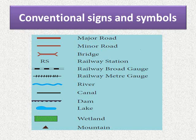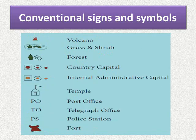The various conventional signs and symbols include: major road, rock tunnel, road bridge, railway station (RS), railway broad gauge, railway meter gauge, river, canal, dam, lake, wetland, mountain, volcano, grass and shrub, forest, country capital, internal administrative capital, temple, post office (P.O.), telegraph office (T.O.), police station (P.S.), and fort. By seeing them, you should be able to identify features such as a post office, police station, or fort.